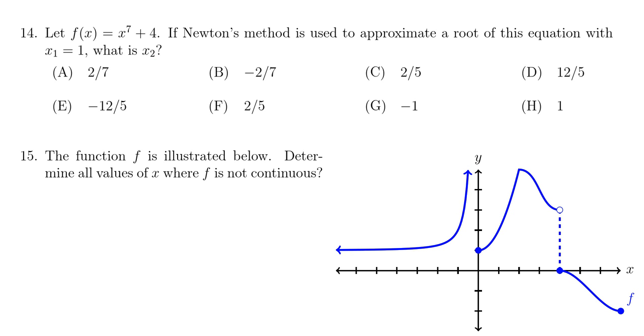Well, by Newton's method, x2 is going to equal x1 minus f of x1 over f prime at x1. So what do we have here?